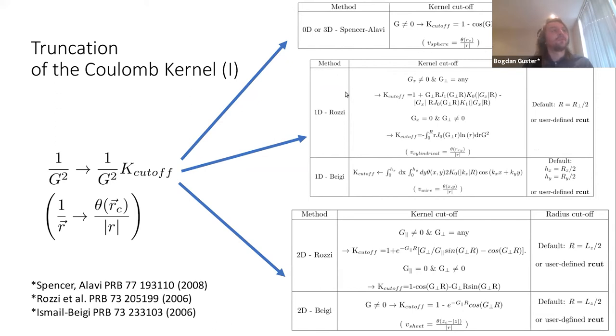For the 1D and 2D cases, there are methods proposed by Rozzi or Beigi, with a specific mention that in the Rozzi case for one-dimensional truncation, you have basically a cylindrical cross section.